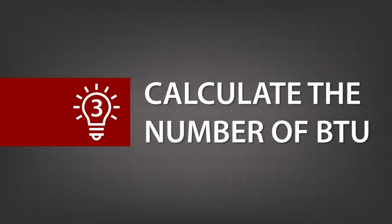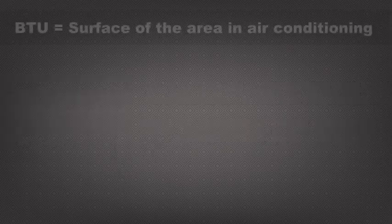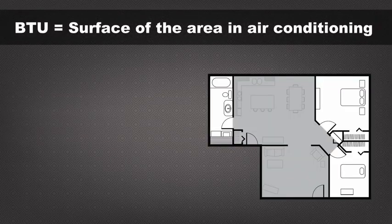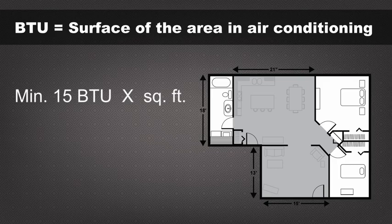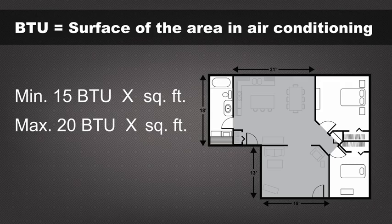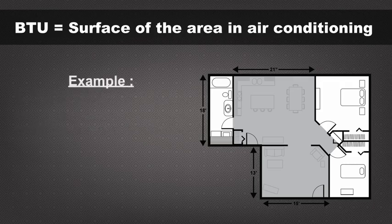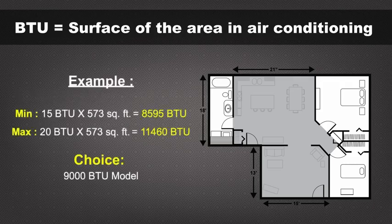Tip 3: Calculate the number of BTU. For a quick estimate, calculate a minimum of 15 air conditioning BTU and a maximum of 20 air conditioning BTU per square foot. Choose the heat pump model that has a BTU value between those two values.